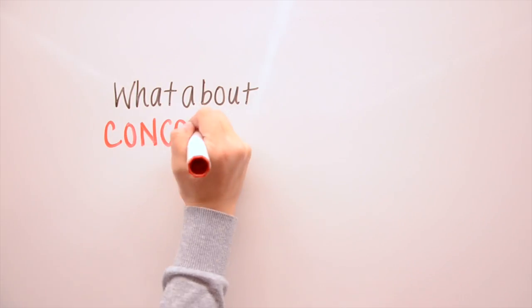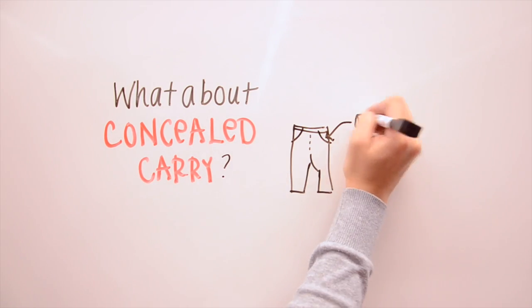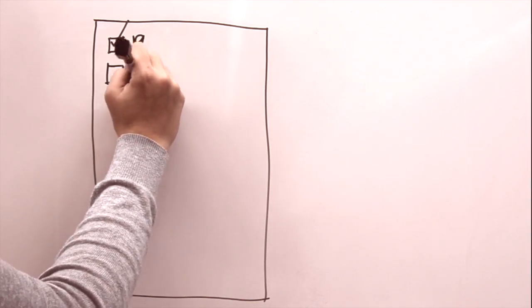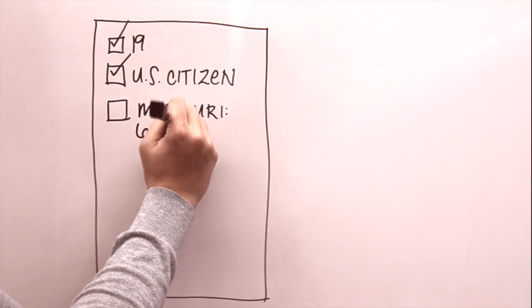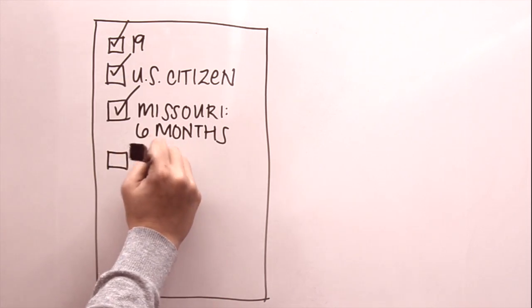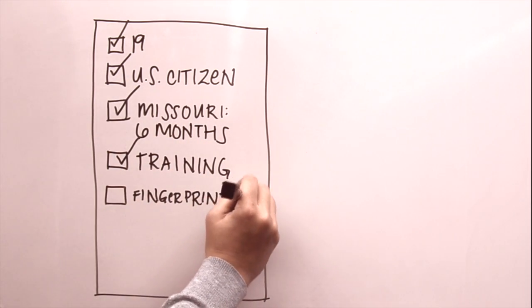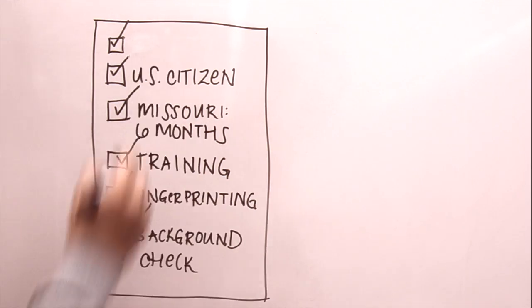What about concealed carry? To carry a concealed handgun, a person must have a concealed carry permit, or CCW. It requires a person to be 19, a U.S. citizen, and a Missouri citizen for at least six months. They must complete a weapons training course, submit themselves to fingerprinting, and go through a federal and state background check. Active military members can apply for a conceal and carry permit at 18.